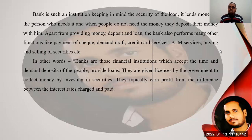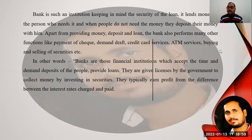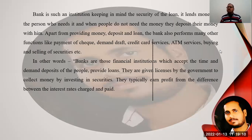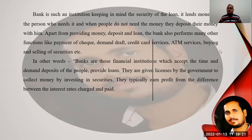When the government does not provide permission to an institution, we cannot believe in it. The bank is such an institution where the government has authorized it for performing such kinds of services. If an institution does not have an authenticated license from the government side, we must call it a financial institution or financial agency, but it will not be called a bank. A bank is a brand where the government has provided permission for doing transactions and trading of money.